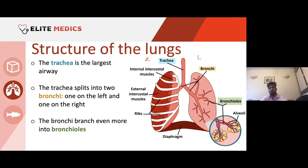The bronchus then splits into bronchioles — all of this is just to increase surface area. If you zoom in further, you can see that at the end of each bronchiole there are these clusters of air-filled sacs — our alveoli. Brief recap: air moves down the trachea, goes through each of the bronchi, splits into the bronchioles, and at the ends of each bronchiole you'll find the alveoli.